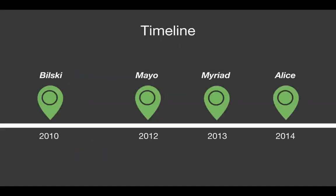So this is the timeline we're working with. Bilski came out in 2010. Mayo was in 2012. Myriad was 2013. And finally, Alice was in 2014. We'll do a brief recap of these cases just to jog your memory in case you might've gotten a little bit rusty.